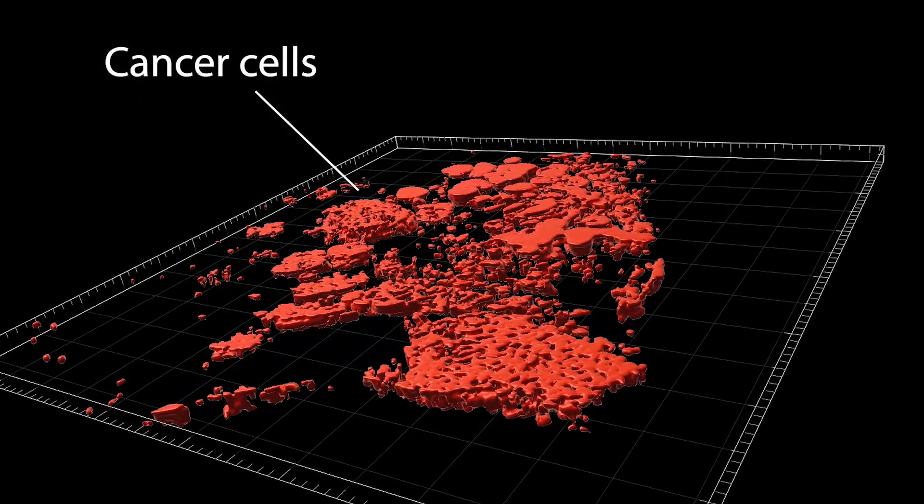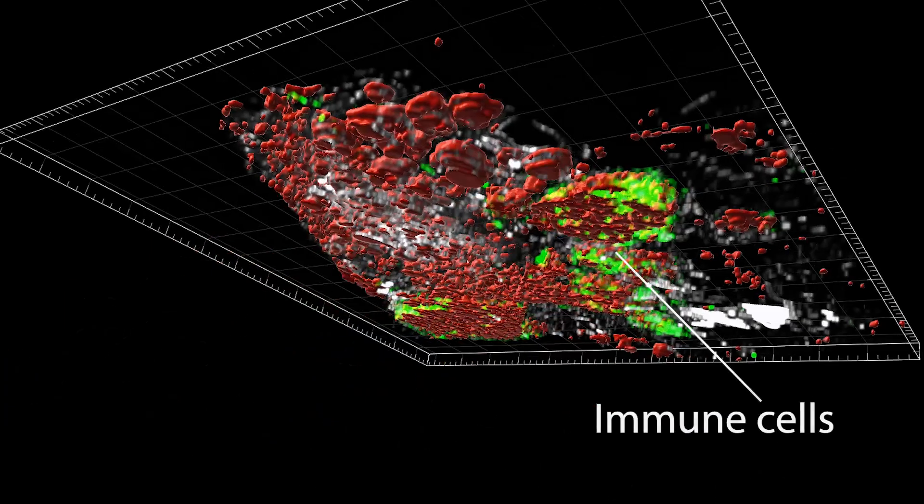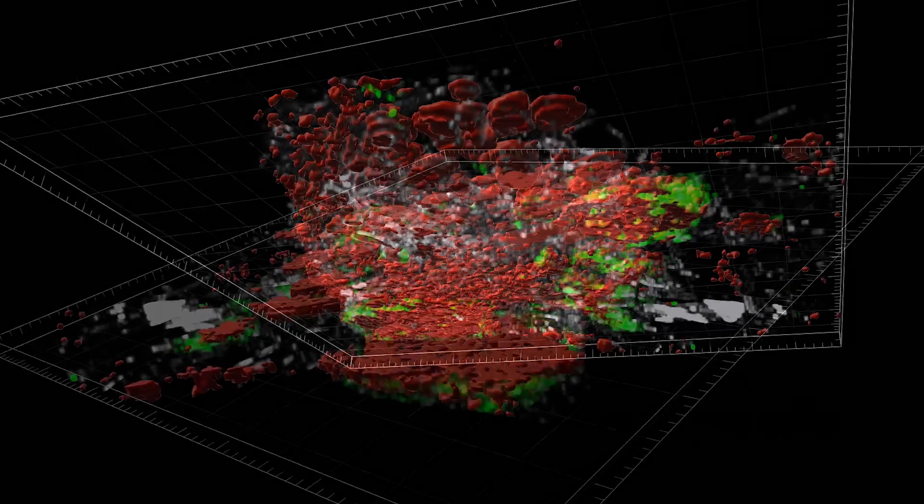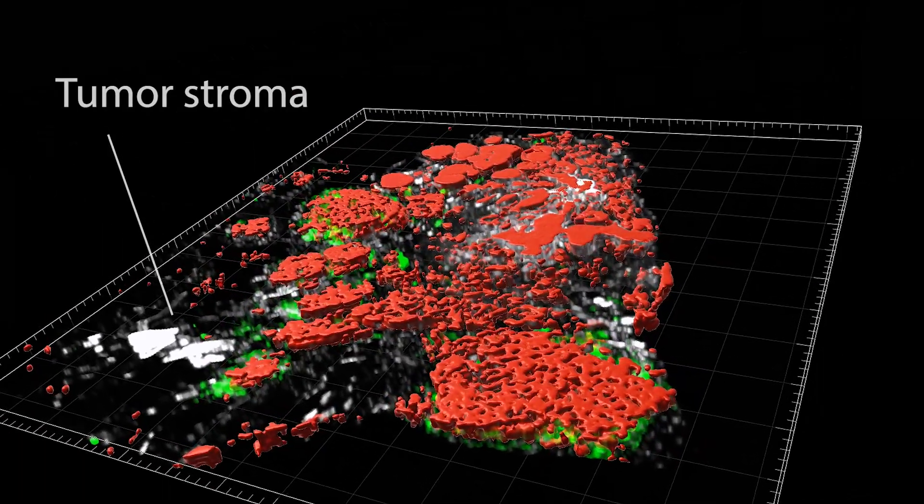In this breast tumor, cancer cells are in red, immune cells green, and support cells called the tumor stroma are white.